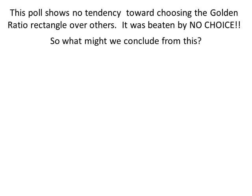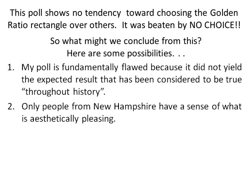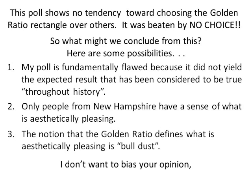So what might we conclude from this? Here are some possibilities. Possibility number one: my poll is fundamentally flawed because it did not yield the expected result that has been considered to be true throughout history, according to the University of Minnesota Geometry Department. Possibility number two: only people from New Hampshire have a sense of what is aesthetically pleasing. Could be. Possibility number three: the notion that the golden ratio defines what is aesthetically pleasing is bulldust.